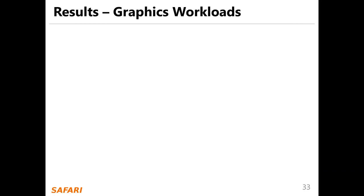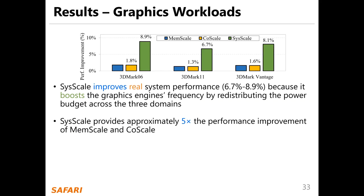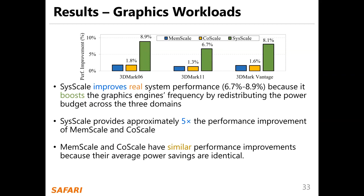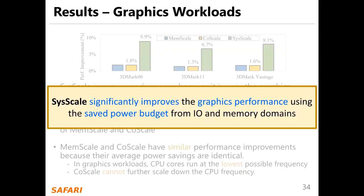Now let's see the results for the graphics workloads. C-Scale improves real system performance between 6.7% and 8.9% because C-Scale boosts the graphics engine frequency by redistributing the power budget across the three domains. C-Scale provides approximately five times the performance improvements of MemScale and CoreScale. MemScale and CoreScale have similar performance improvements because in graphics workloads, CPU cores run at the lowest possible frequency, so CoreScale cannot further scale down the CPU frequency. We conclude that C-Scale significantly improved graphics performance using the saved power budget from the IO and memory domains.